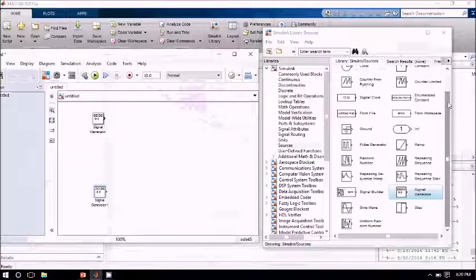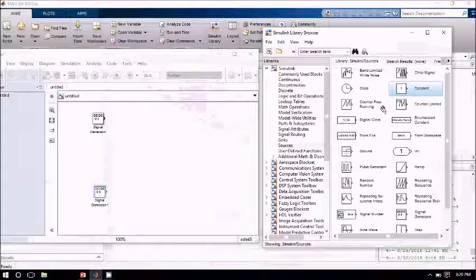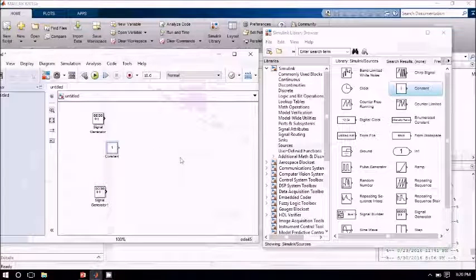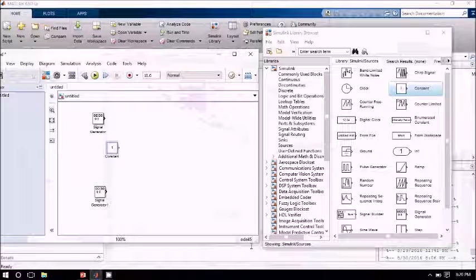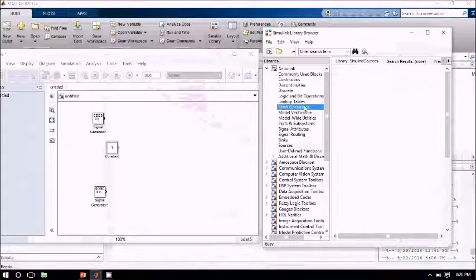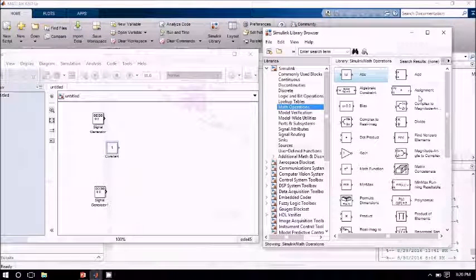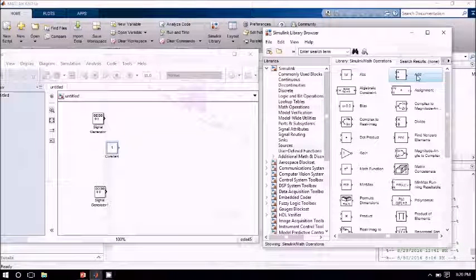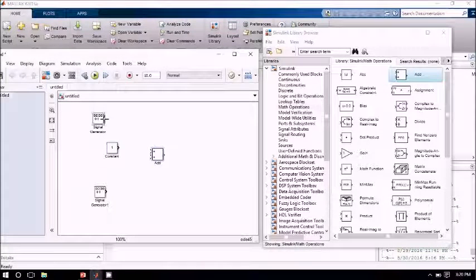And I require a constant signal. Now to the message signal, I have two different types of modulation amplitude modulation technique. One is amplitude modulation with carrier and amplitude modulation that is double sideband suppressed carrier, that is without carrier. So I require a constant signal. Now what do I do? I go in with my math operations. I take an adder. I put it up here and I add these both signals.